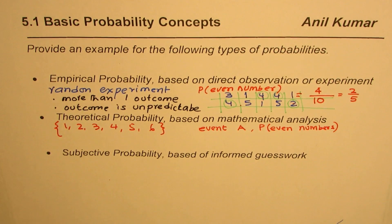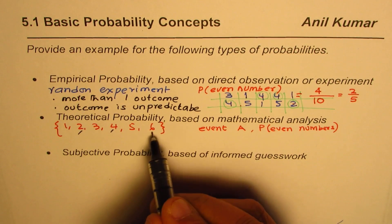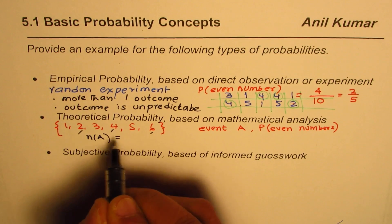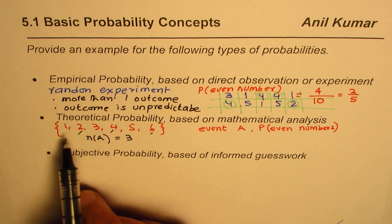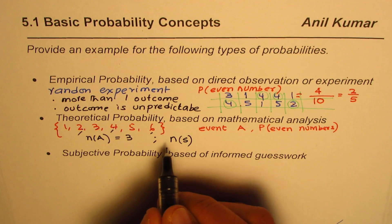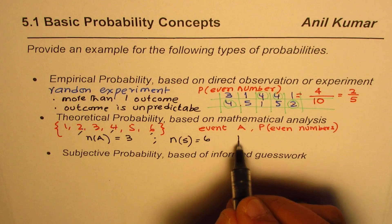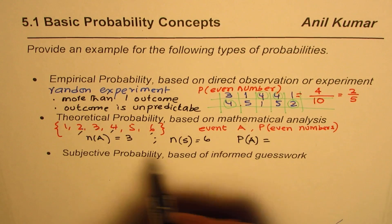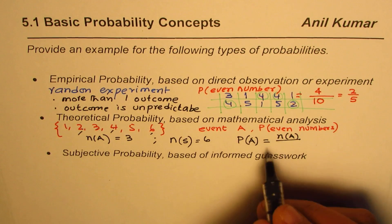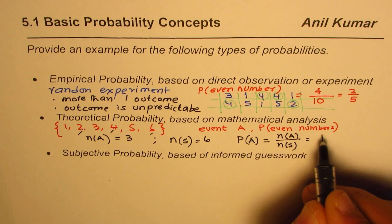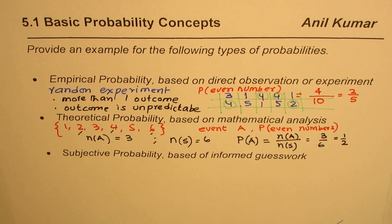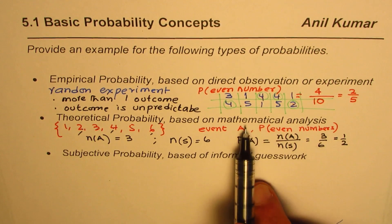Now in this case we have how many even numbers. The even numbers are one, four, and six. So the number of even numbers which we can say is N(A) is three. And in this sample space total number of outcomes are one, two, three, four, five, six. So we know total number of outcomes in our sample space are six. Therefore the probability of event A is favorable number of outcomes to total number of outcomes, which in this case will be three over six or equal to half. So the theoretical probability for getting an even number when you roll a die is half. This is based on our mathematical analysis.